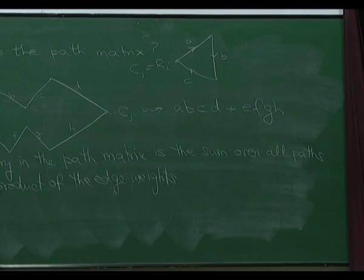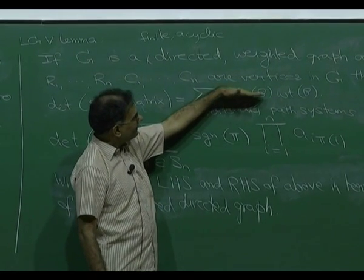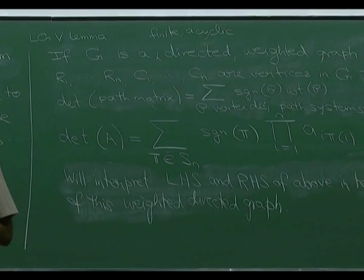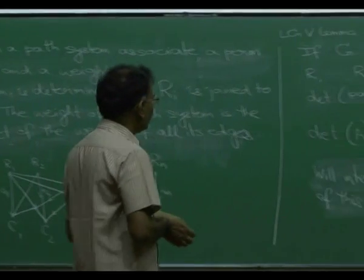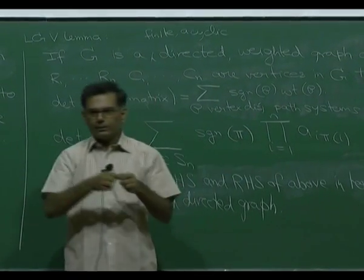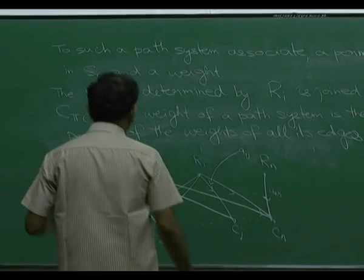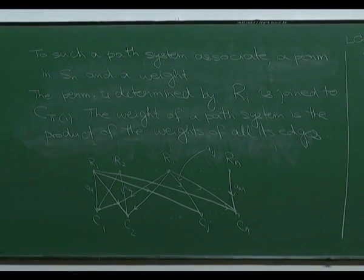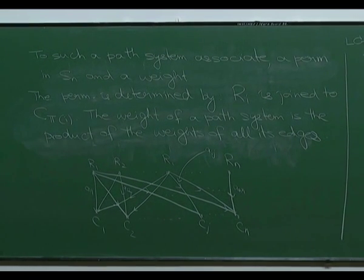So: if G is a finite acyclic directed weighted graph with chosen vertices R₁ to Rₙ and C₁ to Cₙ, then the determinant of the path matrix equals the sum over all vertex disjoint path systems P of sign(P) times weight(P). The sign of P is the sign of the permutation associated to P, and the weight is the product of the edge weights along all paths. This is the LGV lemma — I will not prove it.